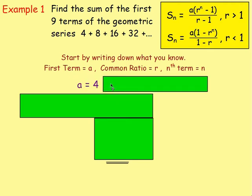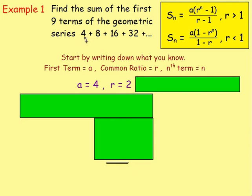So here, a is going to be 4 — a is just your first term. Your common ratio r equals 2. You can see you're multiplying by 2 every time: 4 times 2 is 8, 8 times 2 is 16, 16 times 2 is 32. If you're unsure about the common ratio, just take the second term and divide it by the first — 8 divided by 4 is 2.